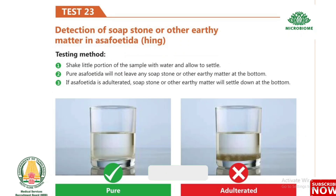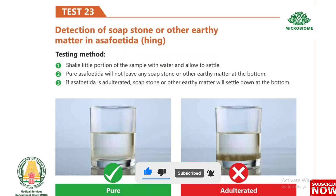Test 23: Detection of soapstone or other earthy matter in asafoetida. Shake a little portion of the sample with water and allow to settle. Pure asafoetida will not leave any soapstone or earthy matter at the bottom. If adulterated, soapstone or other earthy matter will settle down at the bottom.